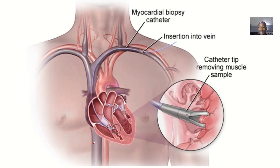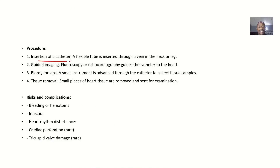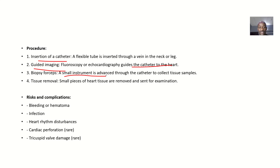For the procedure: a myocardial biopsy catheter is inserted into a vein to take a portion of the heart and send it to the lab for testing. A flexible tube is inserted through a vein in the neck or leg. Imaging guidance — fluoroscopy or echocardiography — guides the catheter to the right portion of the heart. Biopsy forceps are advanced through the catheter to collect tissue samples, and small pieces of heart tissue are removed and sent for examination.